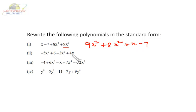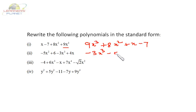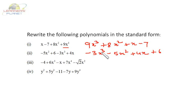Similarly, the term with the highest exponent of the variable is -3x³, then -5x², then +4x, and then +6. So: highest power, then the second highest, third, and the constant.